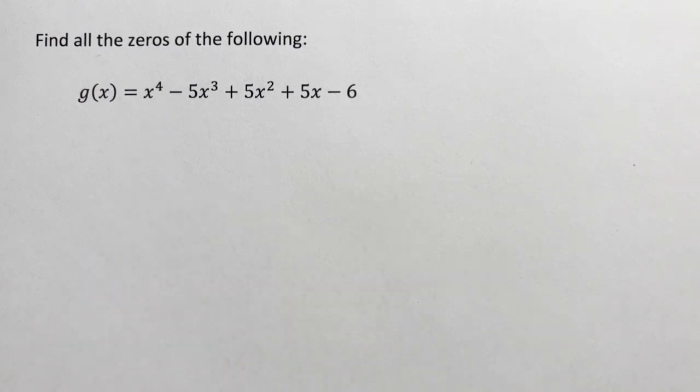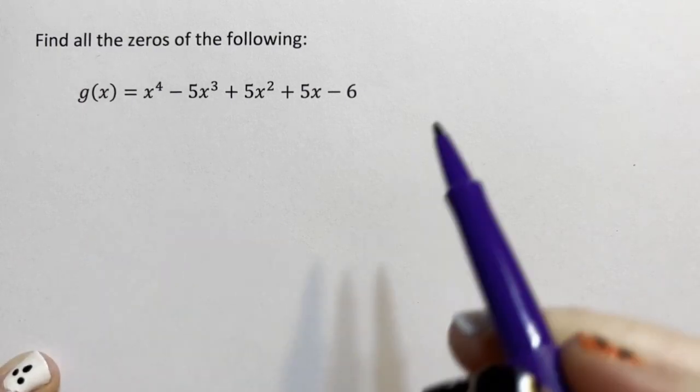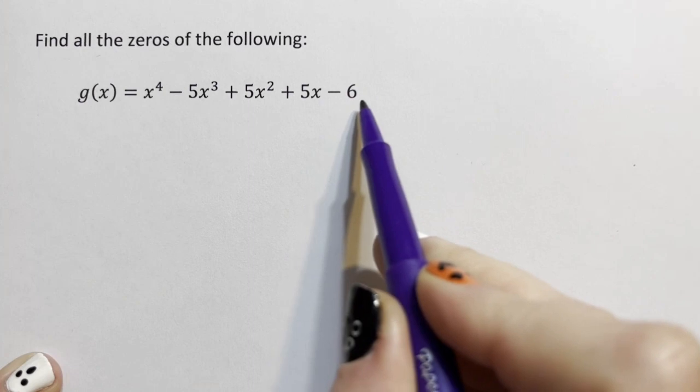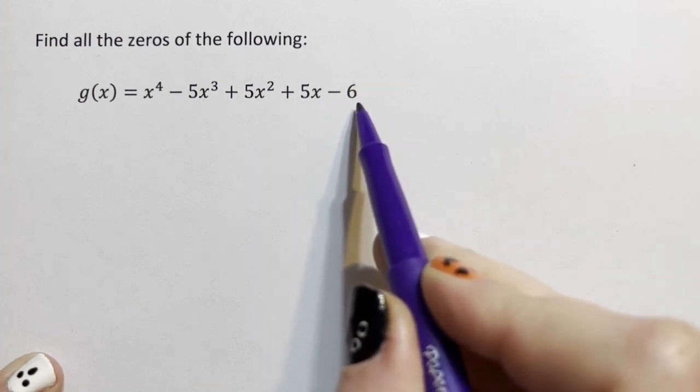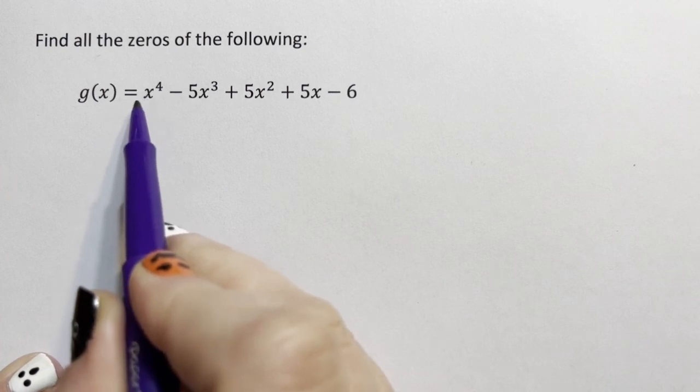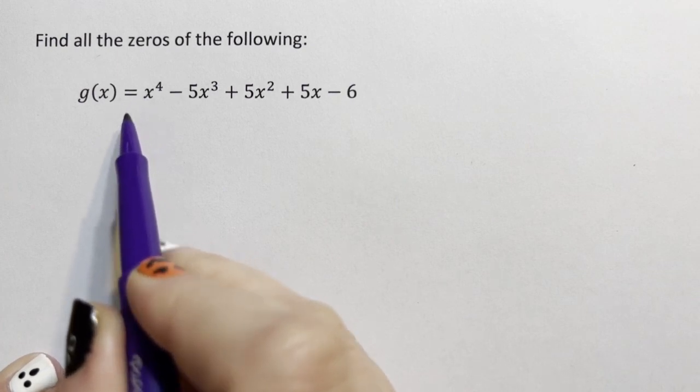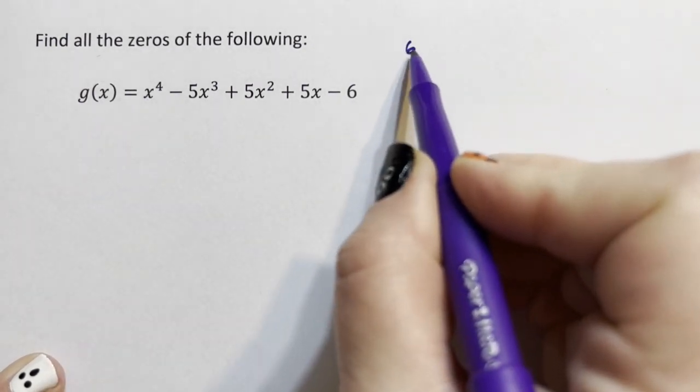To find the zeros of a polynomial, assuming that they're real zeros, there is a trick where any real zero has to be the ratio of the factors of the constant term divided by the ratios of the factors of the leading coefficient.